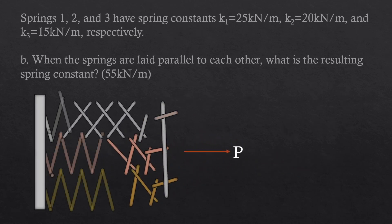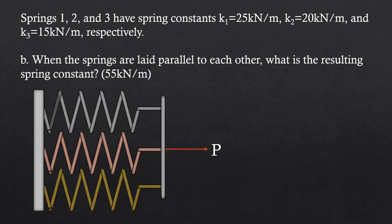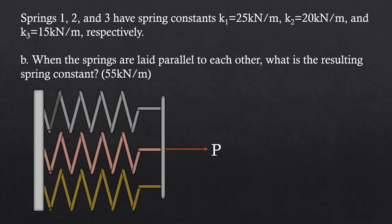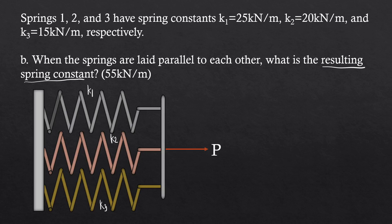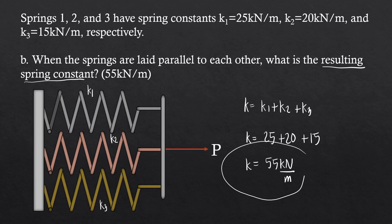For letter B, when the springs are laid parallel to each other, what is the resulting spring constant? The springs are in parallel, with spring constants k1, k2, and k3. To solve the resulting spring constant, we simply add the individual spring constants: k equals k1 plus k2 plus k3, which is 25 plus 20 plus 15, giving us 55 kN per m.